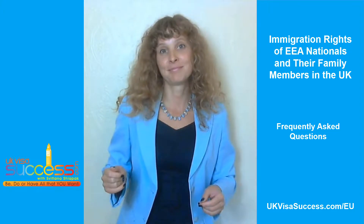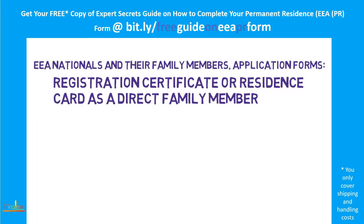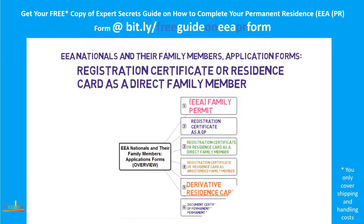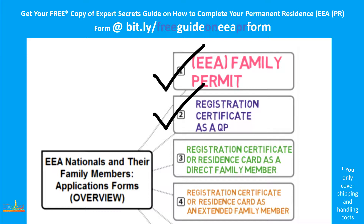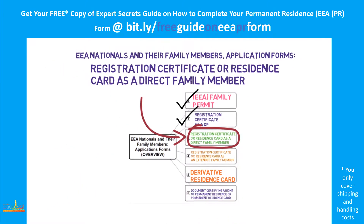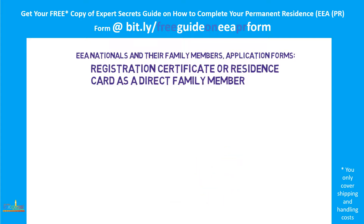So here's the next question: EU nationals and their family members' application forms — registration certificates or a residence card as a direct family member. In my previous videos I've given you an overview of the application forms which EU nationals and their family members can use when making their applications. I also explain why, when and how you can apply for a family permit and a registration certificate. In today's video I'll concentrate on the third type of application: registration certificates or a residence card as a direct family member. I would like to make it very simple for you, and therefore I would like you to understand two things.